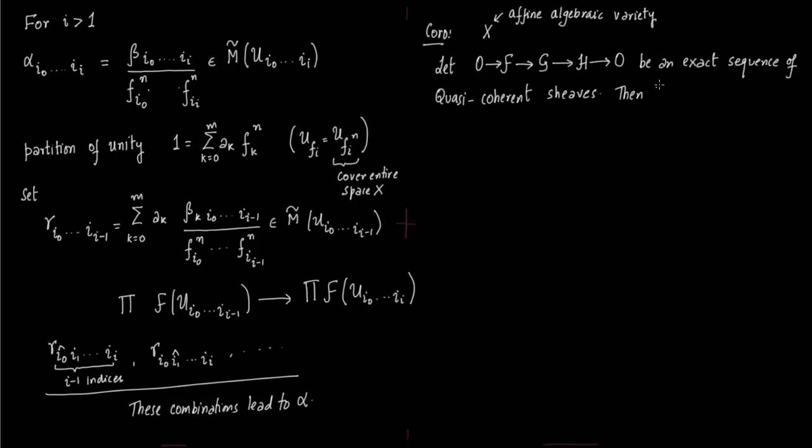So you will have the global sections first. And then you have h^1, h^2, h^3 and so on. But all those h^1, h^2, and h^3 associated with F, G, and H are 0.